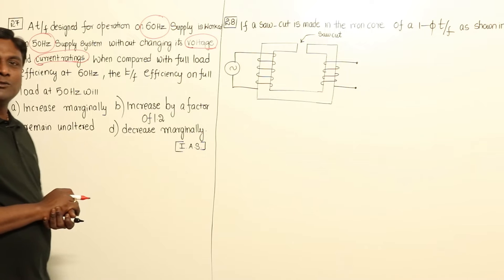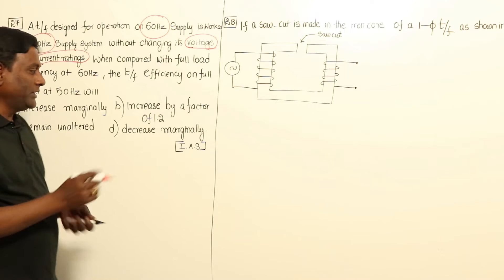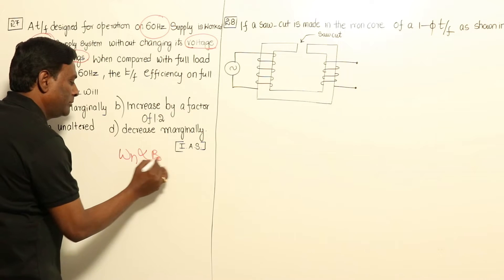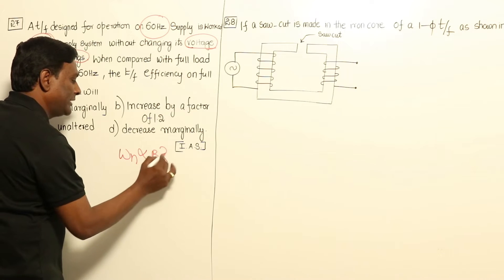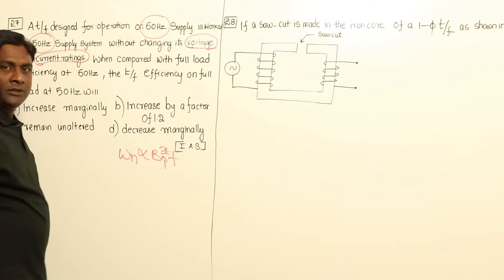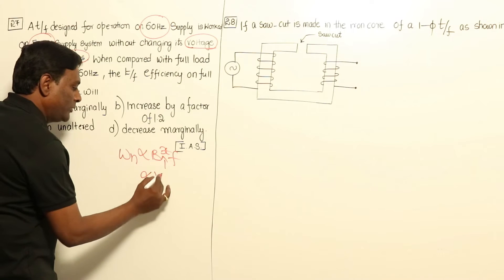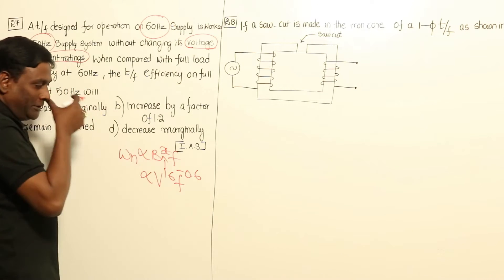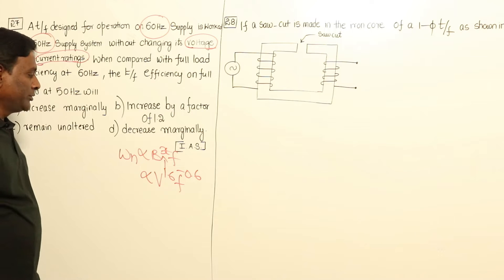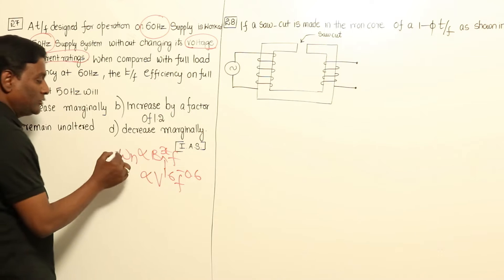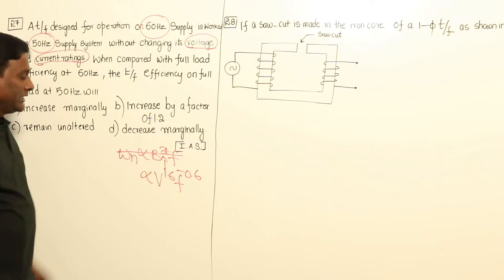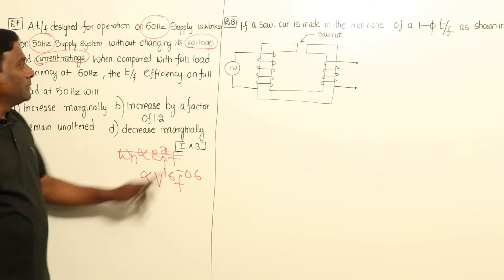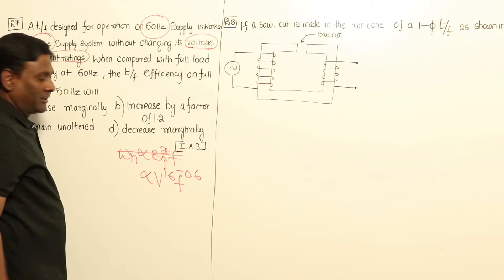The only deciding factor is going to be hysteresis loss. Hysteresis loss is directly proportional to Bmax to the power of X into F, or directly proportional to V to the power of 1.6 times F to the power of minus 0.6. Which equation has to be used? If Bmax is maintained constant, hysteresis loss is directly proportional to frequency. But here, voltages are maintained constant.